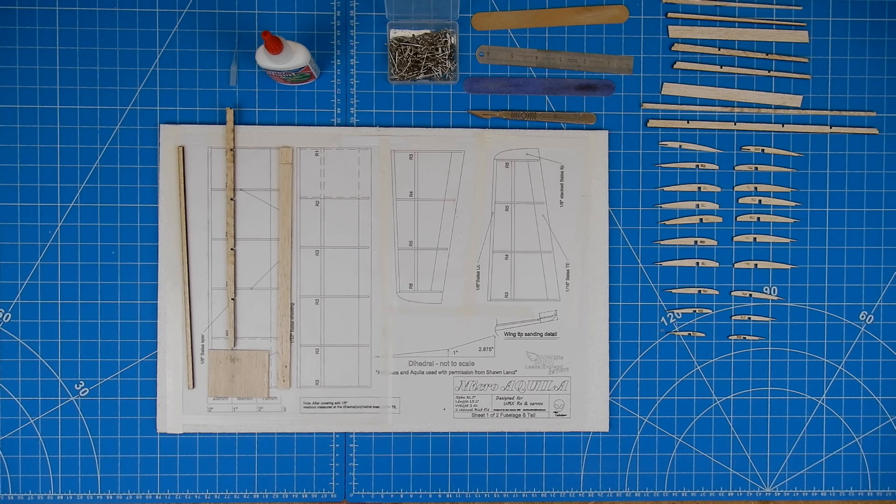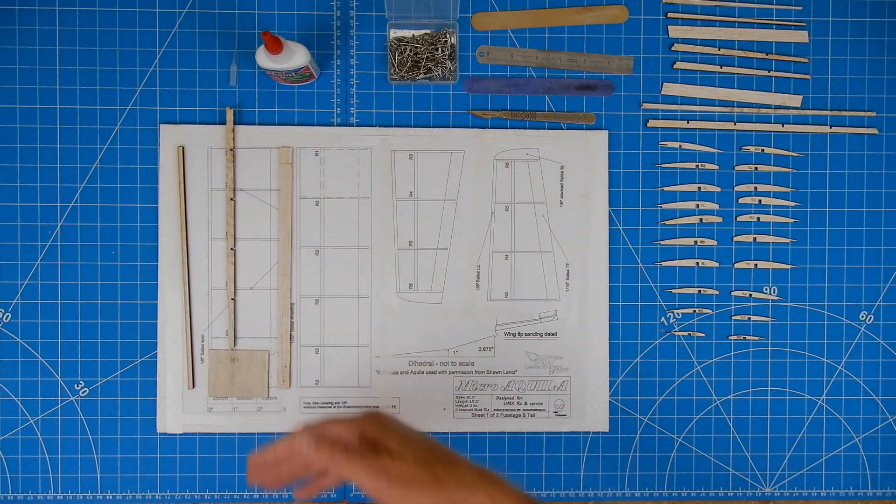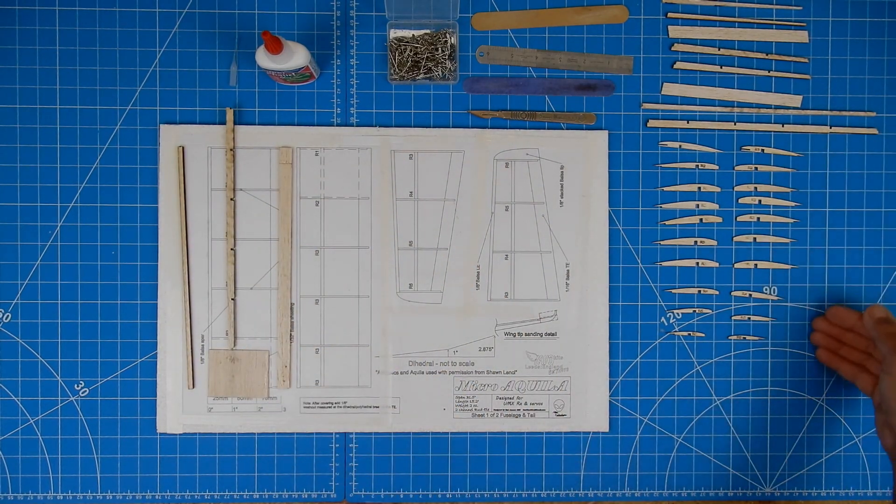Okay, one micro Aquila wing to build. It's four panels. The four panels are all built independently and I have cut out all the spars, trailing edges, the leading edges, all my ribs.